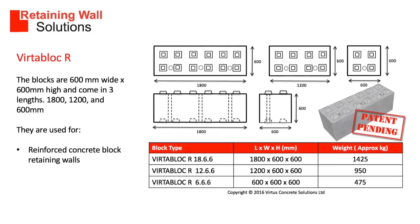The second block type is a VertaBlock R. These blocks have holes in for rebar. The blocks are 600mm wide by 600mm high and come in three lengths: 1800, 1200 and 600mm. They are used for reinforced concrete block retaining walls.